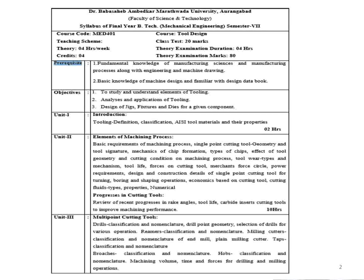That is the first objective. The second objective is to analyze and apply tooling — you are supposed to analyze the toolings and understand what are the different applications where these toolings are used. By analyzing the tooling, you can think of certain modifications. The third objective is the design of jigs, fixtures, and dies for a given component. Here you are going to study how to design the jigs as well as the fixtures and the different sheet metal and drawing dies.